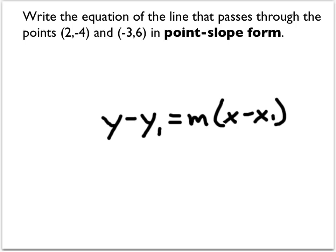In order to use the point-slope form, we need a point and we need the slope. So let's pick one of these points. It doesn't matter which one. For sake of argument, let's pick this first point as our point for point-slope form.